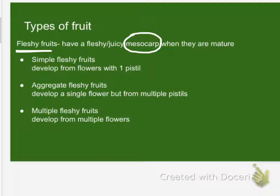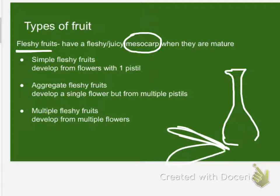Do you remember what the pistil is from when you did plant fertilization with Mr. Maple? It's the female part that sticks up — the pollen travels down that tube and fertilizes the ovary. You'll often see a structure that looks something like a little chimney, like a vase. Here are all the petals, and the little ovaries are in here. The pollen travels down there and fertilizes it.